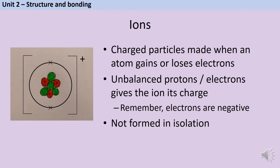Because electrons are negative, if an atom gains more electrons it becomes negatively charged, and if it loses electrons it becomes positively charged. You should also be aware that no single atom turns into an ion on its own — the electrons it's gaining or losing have to come from somewhere, so the formation of an ionic bond always involves two atoms.